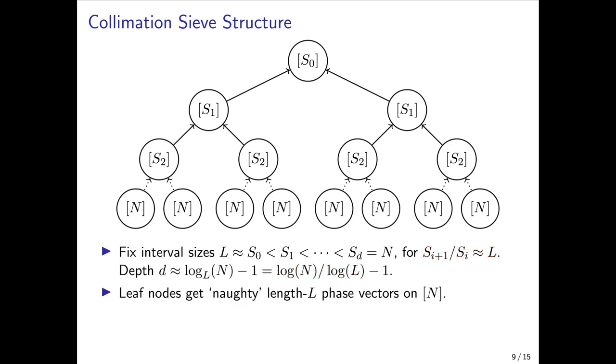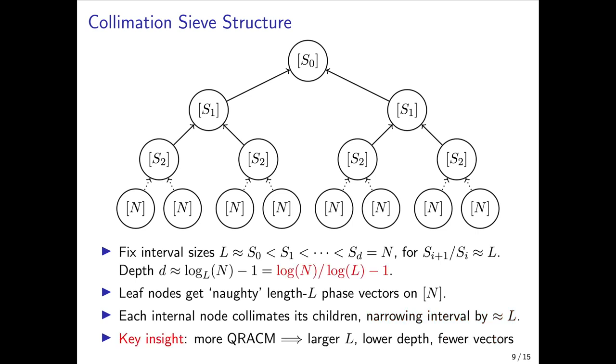In the sieve, the leaf nodes get the naughty phase vectors whose multipliers are on the entire range of the interval N, and each internal node collimates its two children, thereby narrowing the size of the interval by about a factor of L. The key insight we exploit is that the more quantumly accessible RAM we have, the larger we can take L to be. This decreases the depth of the tree and therefore requires fewer naughty vectors to be supplied to the leaf level of the tree. Moreover, this means we need fewer oracle queries to prepare those naughty phase vectors.